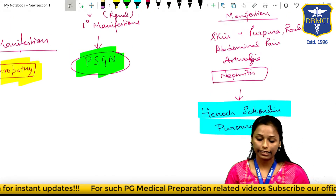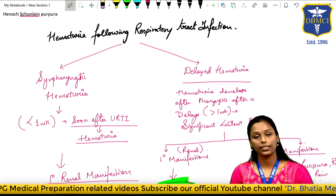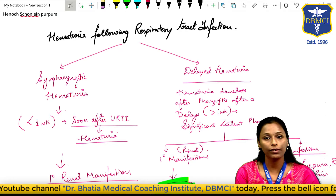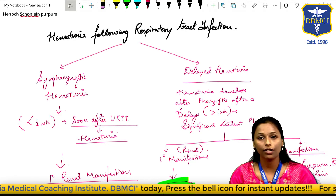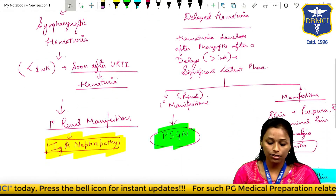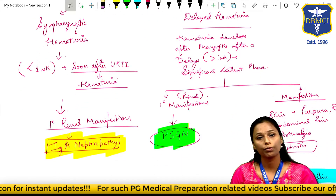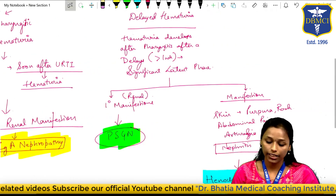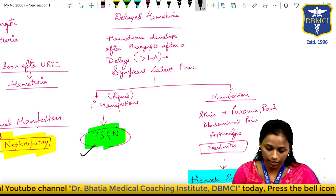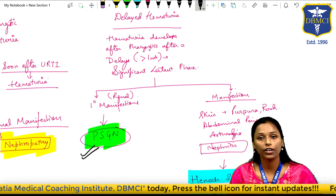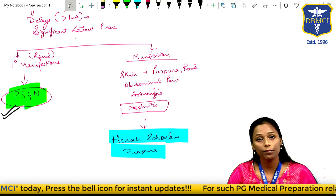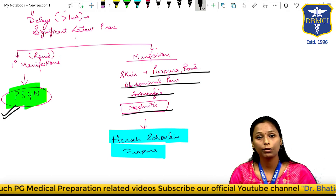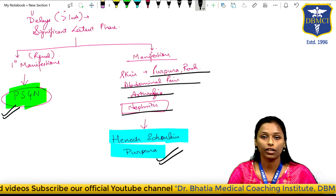So we are dealing with three conditions developing after respiratory tract infection. If hematuria occurs soon after upper RTI with primary renal manifestation, the most likely diagnosis is IgA nephropathy. If there is delayed hematuria with primary renal symptoms, the diagnosis is post-streptococcal glomerulonephritis. If there is delayed hematuria with primary manifestation of purpura, rash, systemic symptoms like abdominal pain and arthralgia, then the condition is most likely Henoch-Schönlein purpura.